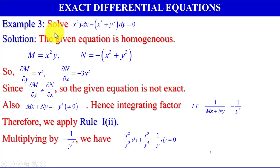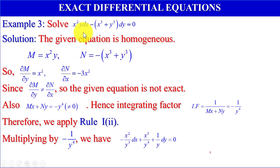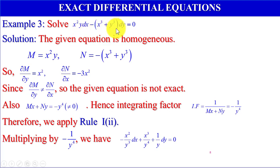Example 3: Solve x squared y dx minus (x cubed plus y cubed) dy equals 0. The given equation is homogeneous because the coefficient of dx, which is x squared y, has total exponent 2 plus 1 equals 3, and the coefficient of dy also has exponents of degree 3. Therefore this equation is homogeneous.